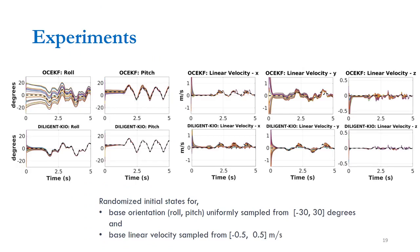We also verify filter convergence qualitatively for randomized initial states, comparing the flat-foot filter OC-EKF and Diligent KIO. These estimators are run for 25 trials with the same measurements, noise parameters, and prior deviations but with random initial orientations and linear velocities. Roll and pitch Euler angles for the initial orientation were uniformly sampled from -30 to 30 degrees, and initial linear velocities from -0.5 to 0.5 meters per second. Diligent KIO is seen to converge faster and towards the true state in these observable directions.